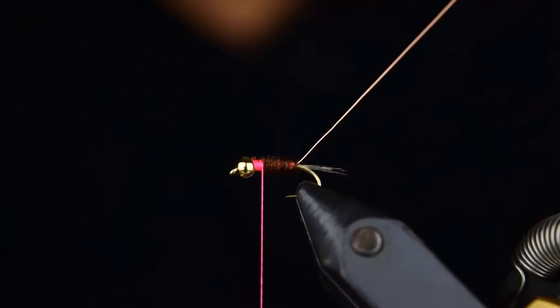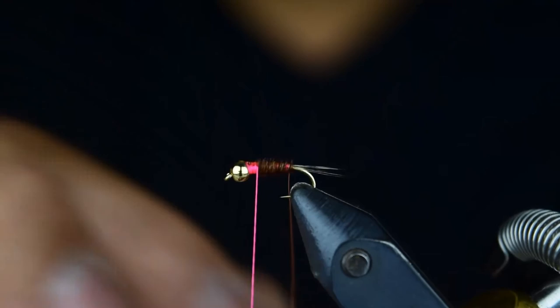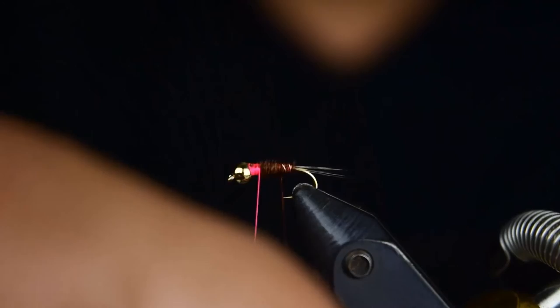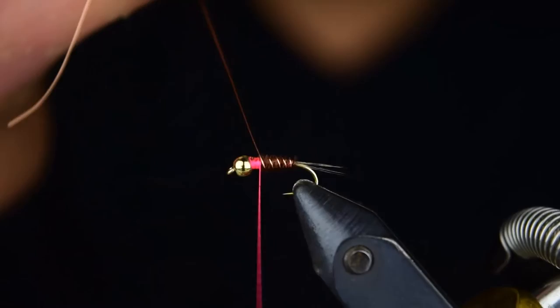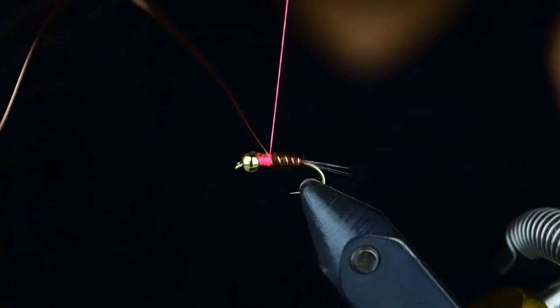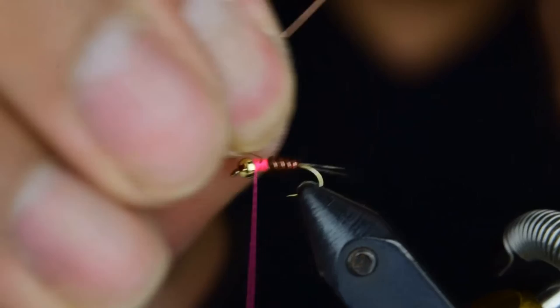We're going to take our wire, and you can counter wrap this if you'd like. We're going to go ahead and counter wrap it here, and what counter wrapping does is it makes that wire stand out just a little bit more. When we get to it, we're going to go ahead and capture our wire and break it off, helicopter it off.